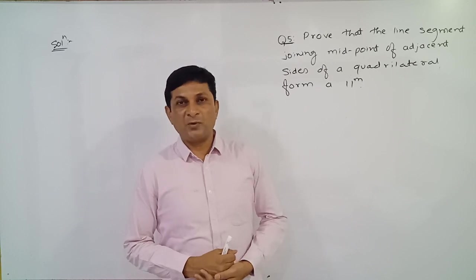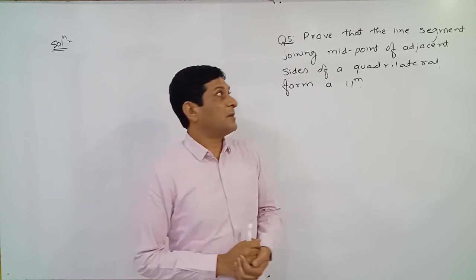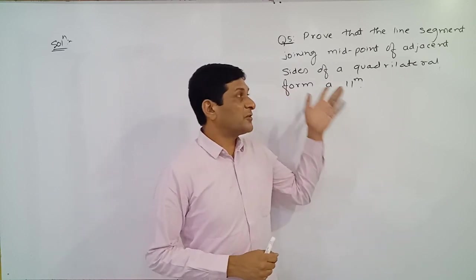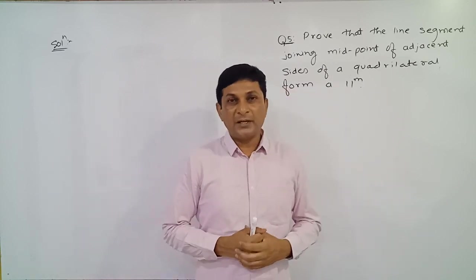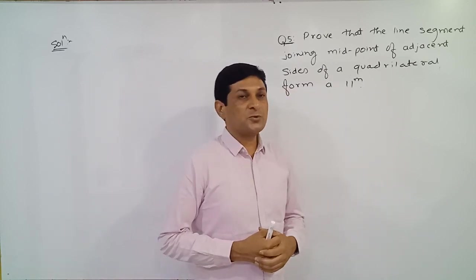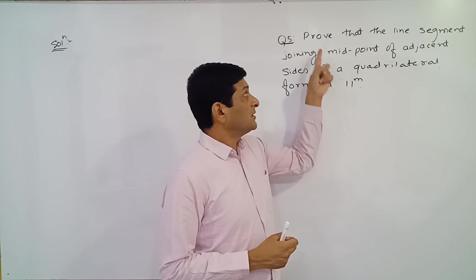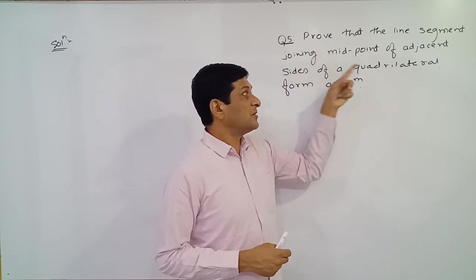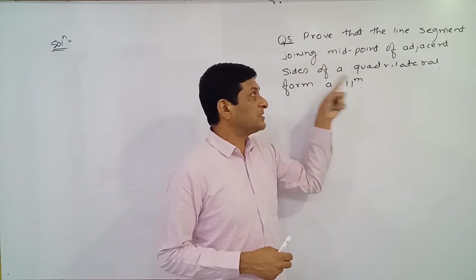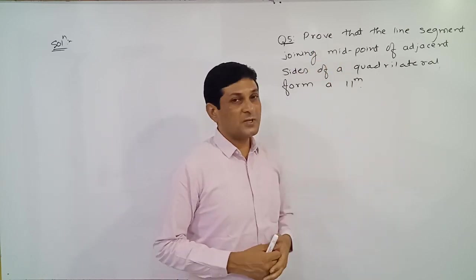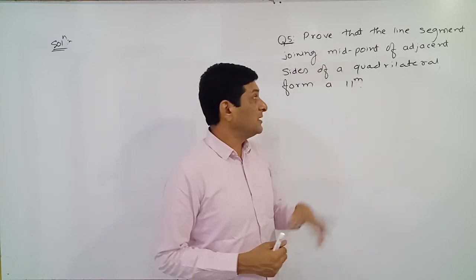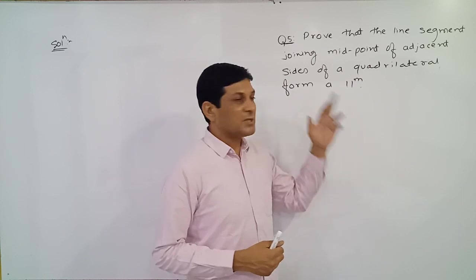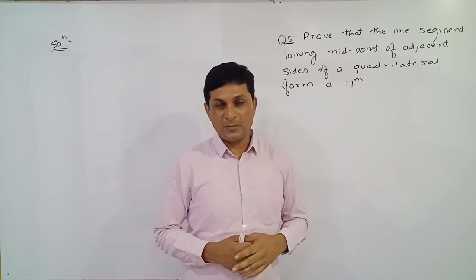Now we are solving the next example, question number 5. In this case, we have to prove that the line segment joining the midpoints of adjacent sides of a quadrilateral forms a parallelogram.